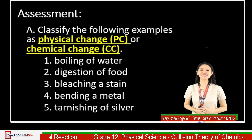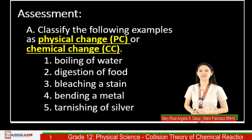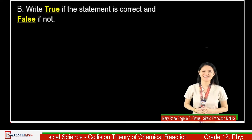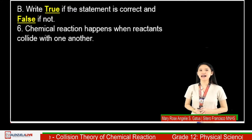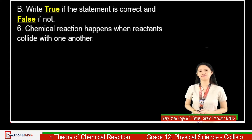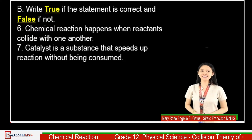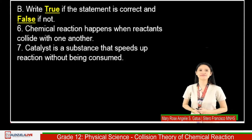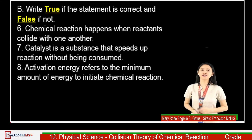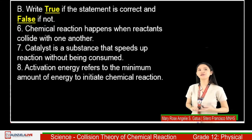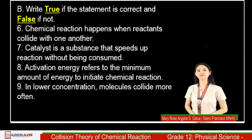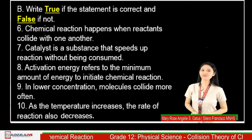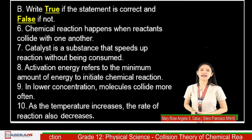Are you done? Now let us proceed to Part B of our assessment, where you are going to write True if the statement is correct and False if not. Number 6: Chemical reaction happens when reactants collide with one another. Number 7: Catalyst is a substance that speeds up reaction without being consumed. Number 8: Activation energy refers to the minimum amount of energy to initiate chemical reaction. Number 9: In lower concentration, molecules collide more often. Number 10: As the temperature increases, the rate of reaction decreases.